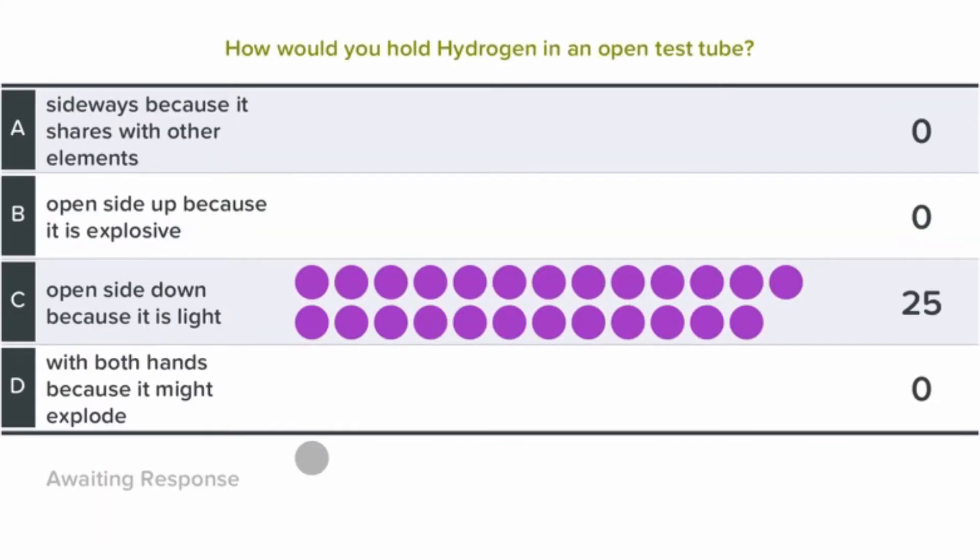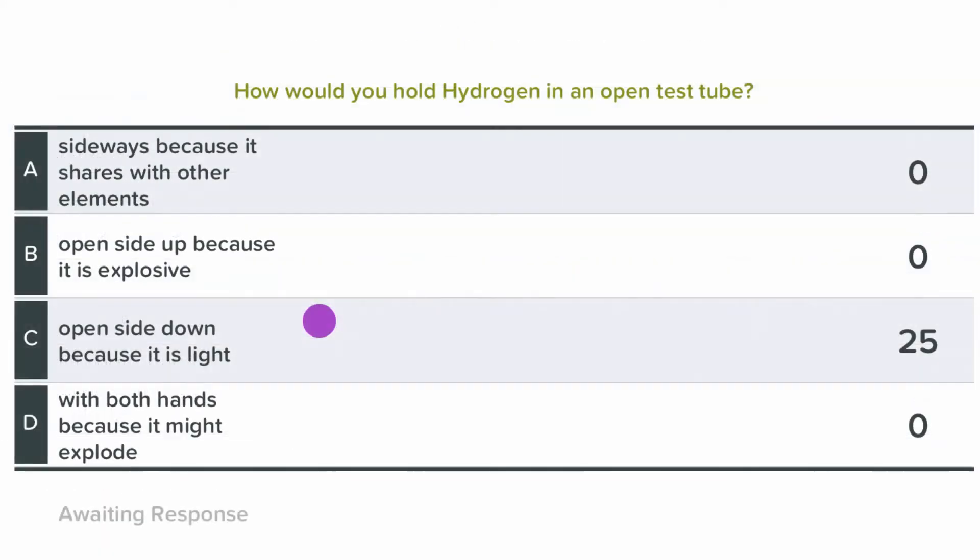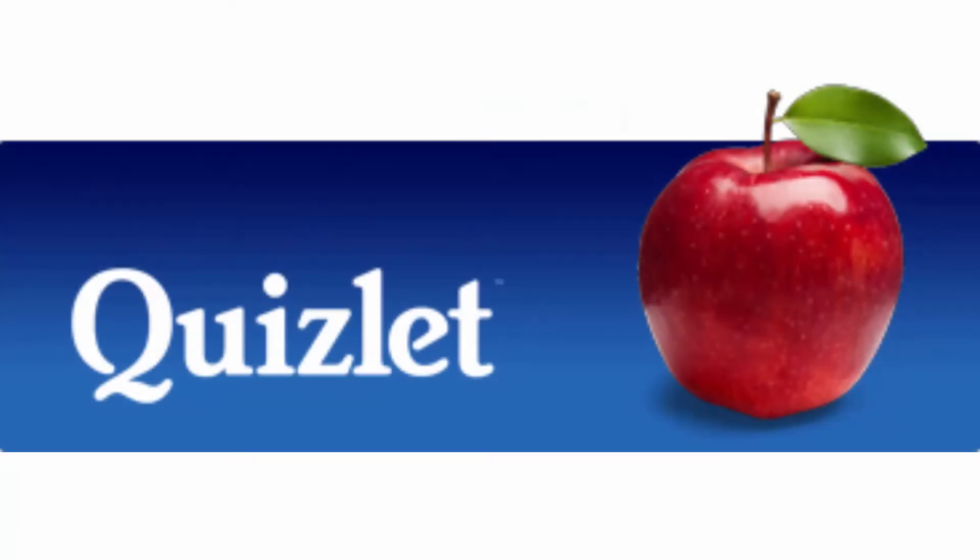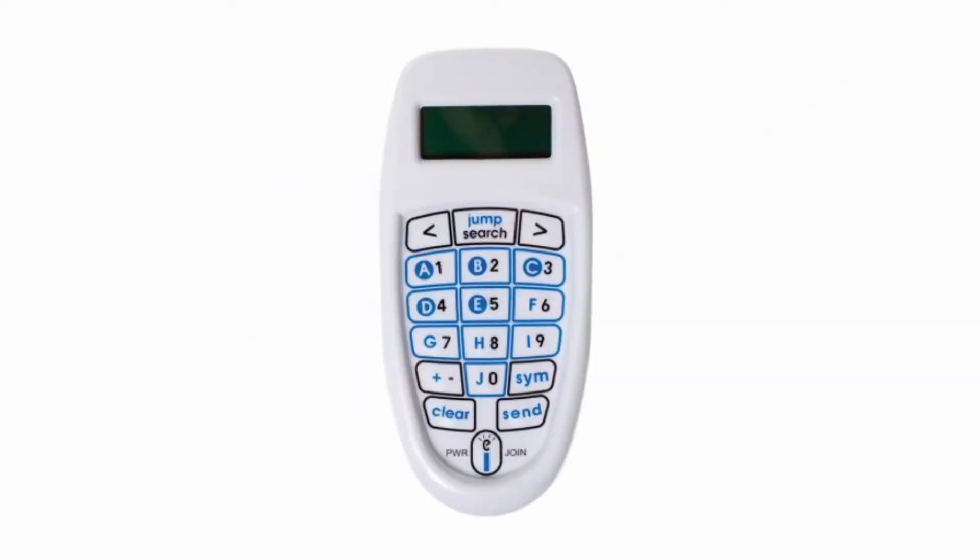Another one is multiple choice. This one has been exploited by more formative assessment software than any other. Examples are Kahoot, Quizlet, and Clickers. These can be great for a quick delivery of large amounts of material.